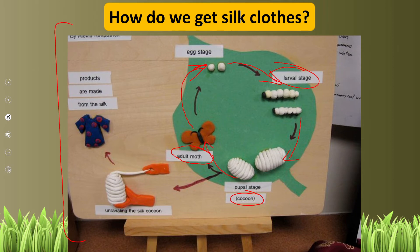Us ke baad is ke andar se dubara adult moth jo hai woh nikal aata hai. Lekin is stage mein inko boil kar ke in ke oopar se yeh jo dhaga hai, silk ka jo thread hai, isko utar liya jata hai.